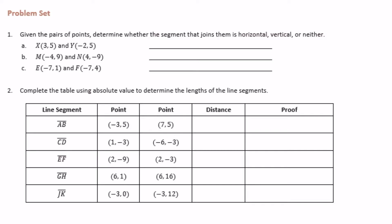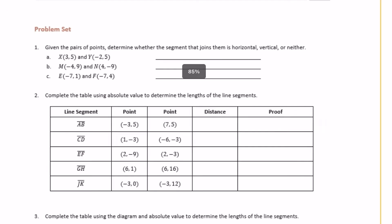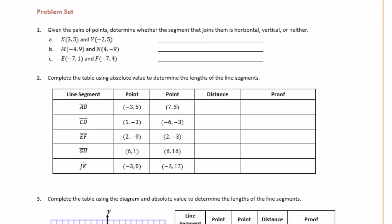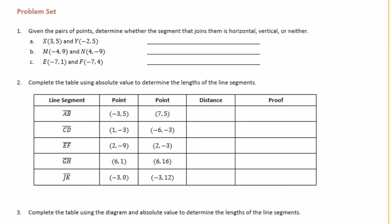So it really wants us to do this without drawing them on a coordinate plane. For part A, what I notice is that both of their y-coordinates are 5. So if both of the y-coordinates are the same, that means it's going to be horizontal.